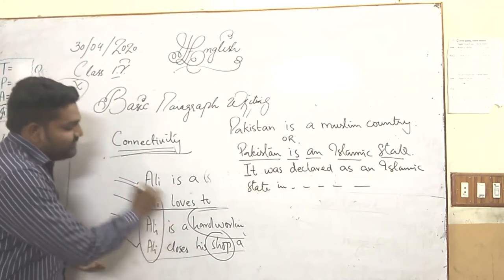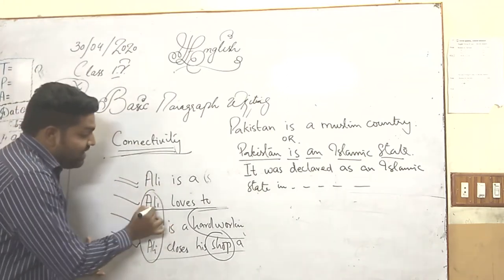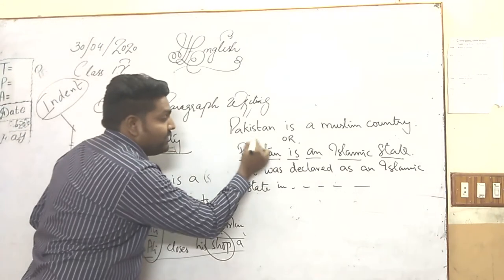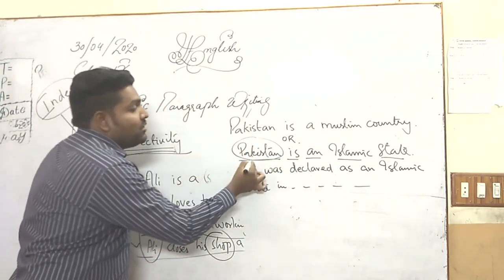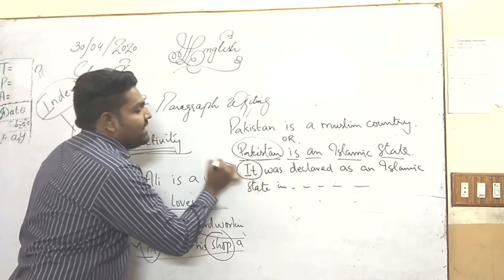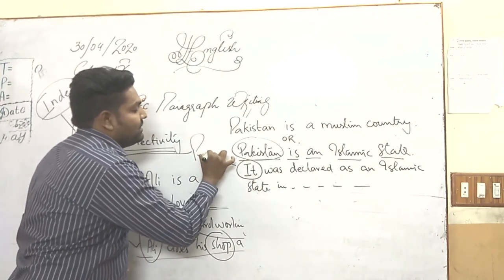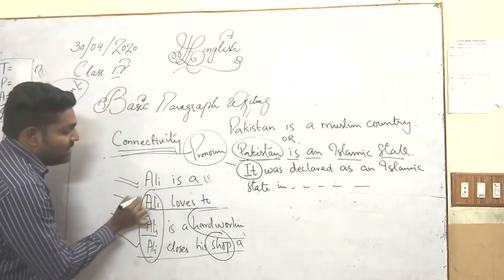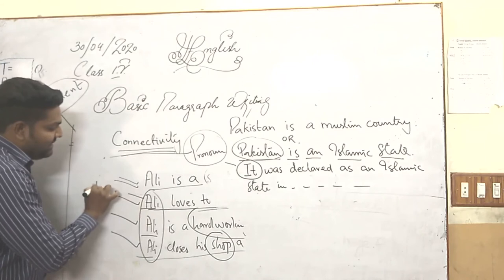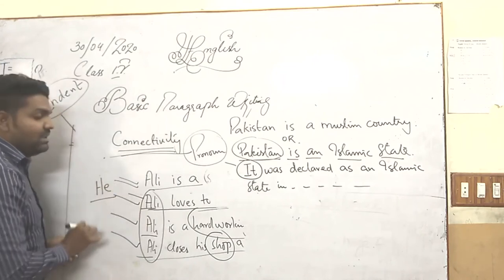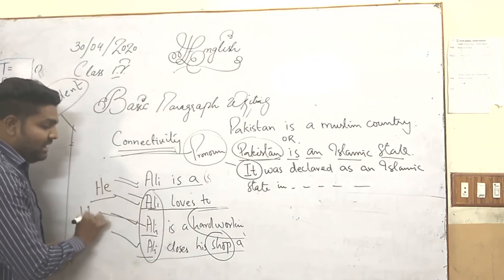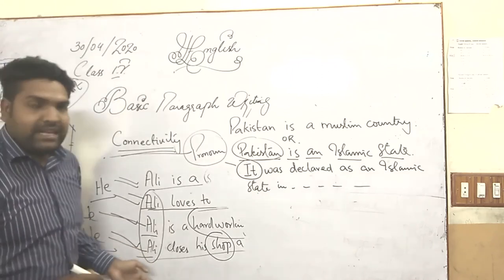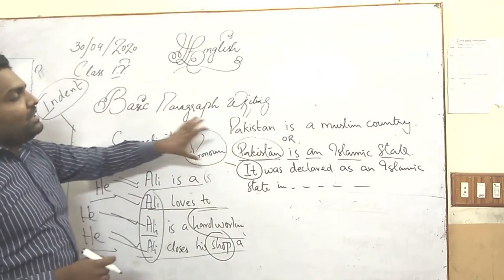I have made another mistake over here. What is the mistake? I have used the noun again and again. But whenever you use a noun first, do not use the noun again — always use a pronoun. For example: Ali is a shopkeeper. So in the second sentence it must be: he loves to eat. He is a hard-working person. He closes his shop at 8. This is called connectivity.